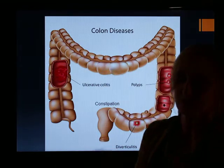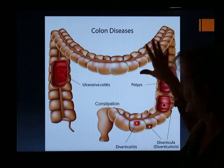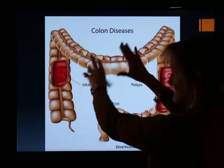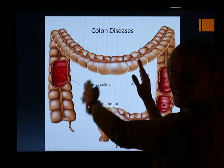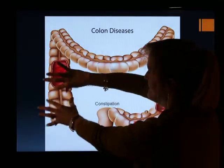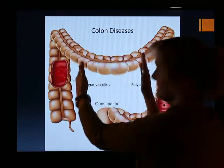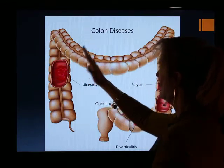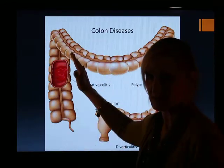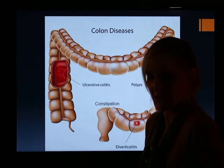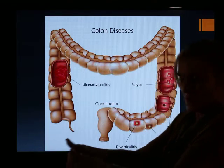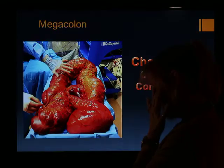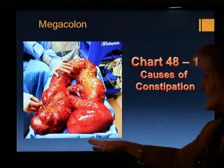When peristalsis stops — and it can stop for various reasons, such as surgery on the large intestine — the patient can develop an ileus, which is a section of the colon that suddenly stops moving. When stool hits an ileus it stops moving, like a conveyor belt that stops while everything on it backs up. This can lead to mega colon.